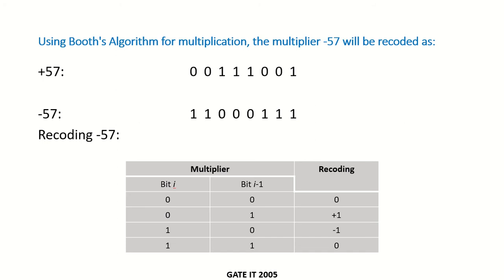In this video we are going to solve some examples related to Booth's algorithm, which came in competitive examinations like GATE. The question is: using Booth's algorithm for multiplication, the multiplier minus 57 will be recoded as what?